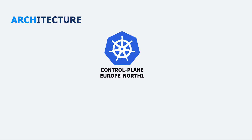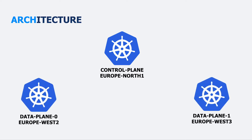In our architecture we have a control plane cluster — this is where we interact with kubectl and describe the K8ssandra clusters we want to deploy. The control plane deploys onto separate data plane clusters. In this architecture we separate the data plane from the control plane. Each data plane runs inside a separate region — using GCP region names, we have our control plane in europe-north1 and our data planes in europe-west2 and europe-west3.